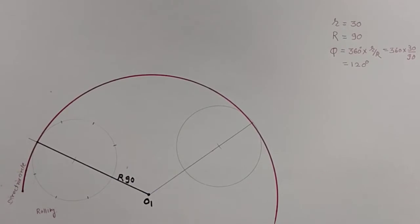We draw our rolling circle, which rolls inside the diating circle. We take the 30 mm radius and draw our rolling circle which rolls inside the diating circle.